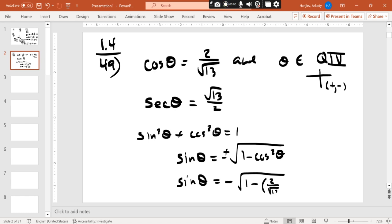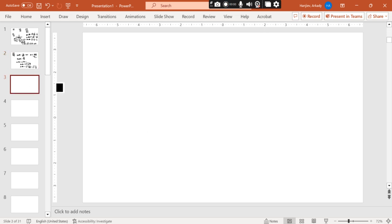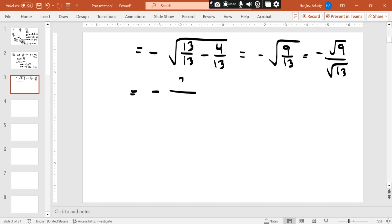So plug it in. 1 minus, and this guy is going to be 2 over root 13, but we're going to square it. If I square the 2, it becomes 4. If I square the root 13, it becomes 13. We need common denominators, which is 13. Negative, and 13 over 13 minus 4 is 9 over 13. I could split this guy into two different pieces. And then a 9 sitting there is going to be actually a 3 on top, and 13 is not a perfect square. So, that is my sine theta.